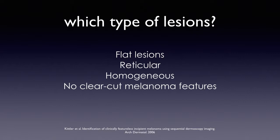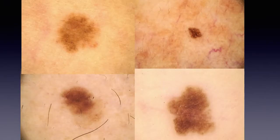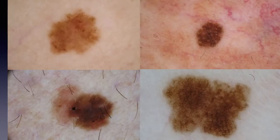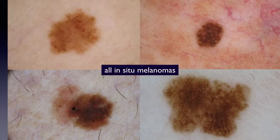Which type of lesions do we include in a follow-up program? We mainly include flat lesions with a reticular or homogeneous pattern in dermoscopy, and of course with no clear-cut melanoma features at the beginning of follow-up. This allows us to identify those that we call featureless melanomas. These are four melanomas diagnosed, and this is the dermoscopic feature at the end of follow-up — all flat reticular lesions with a slight asymmetry that were diagnosed after one year follow-up, and they were all in situ melanomas.